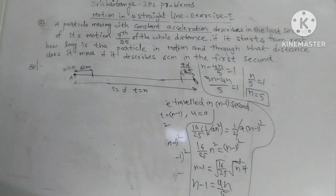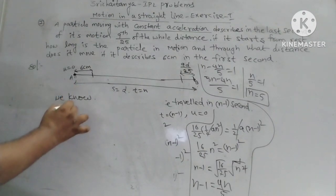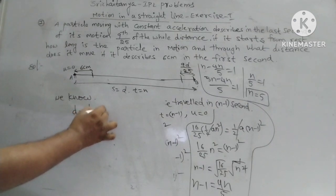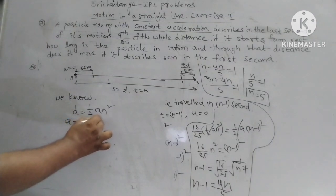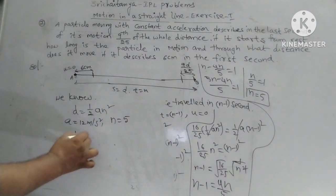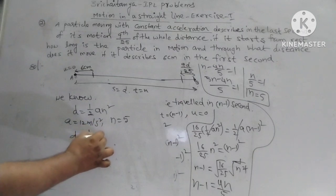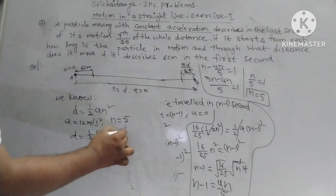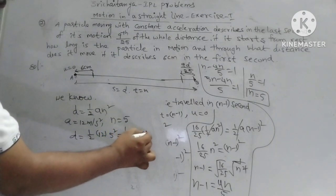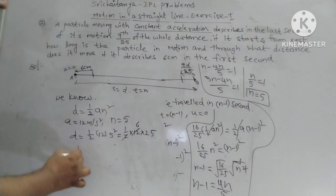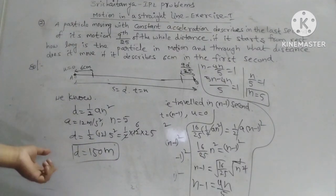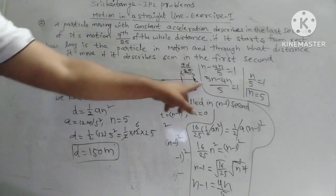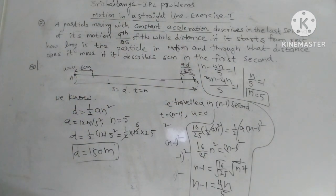The total distance D = ½ × a × N² = ½ × 12 × 25 = 150 metres. So the total distance covered by the body is 150 metres.